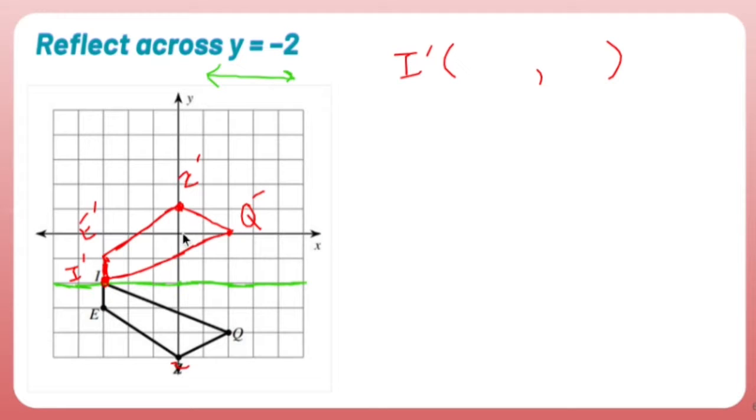To get to I prime, I go left 1, 2, 3, down 1, 2. So I prime is left 3, negative 3, down 2, negative 2.